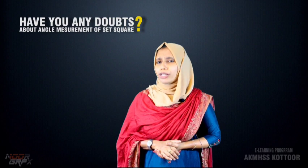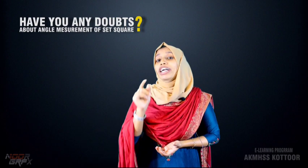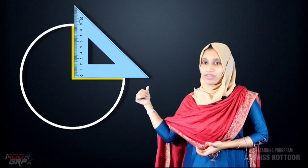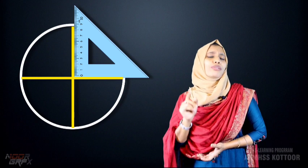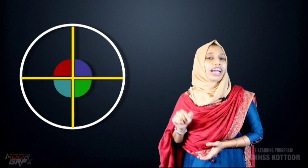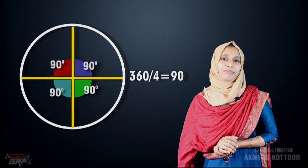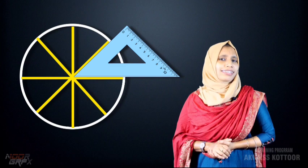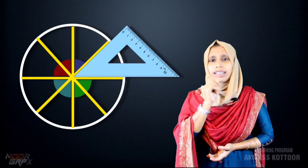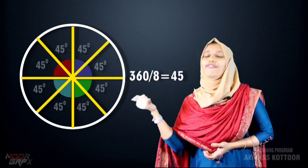We can make the angle measurements clear while doing circle division. I am going to divide a circle into equal parts using the corner of a set square. We can divide a circle into 4 equal parts using this corner. Each angle should be 360 divided by 4, which equals 90 degrees. Similarly, we can divide a circle into 8 equal parts — 360 divided by 8 equals 45 degrees each.